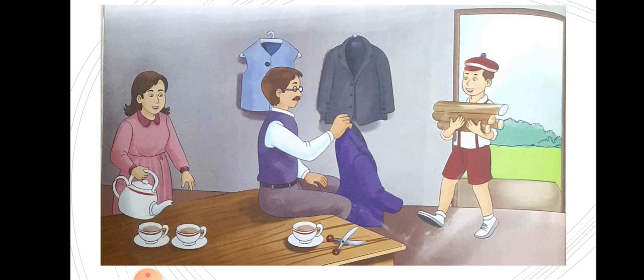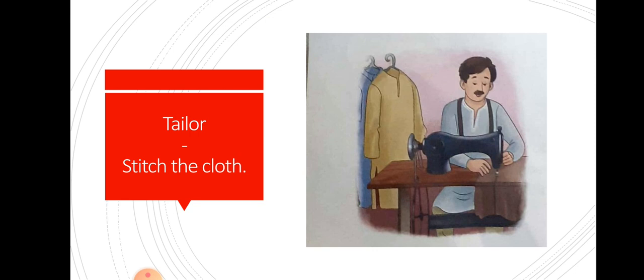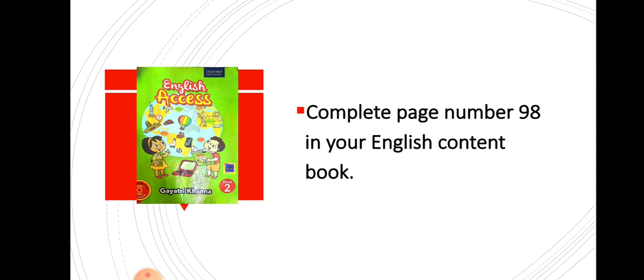So the tailor stitched the cloth for Pelle and now he got his new coat. He became very happy. So now children, you have to complete page number 98 in your English content book.